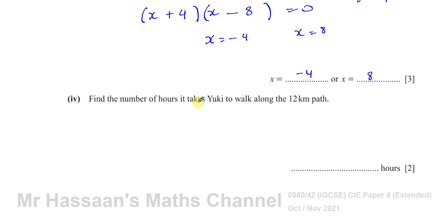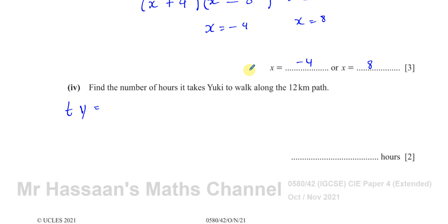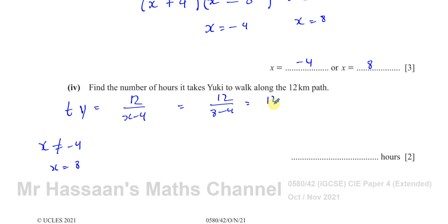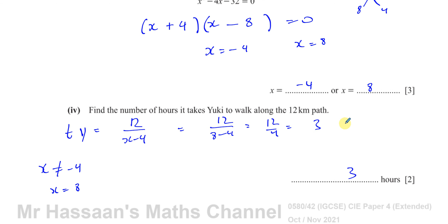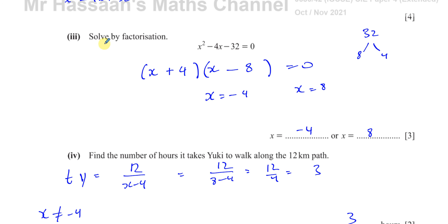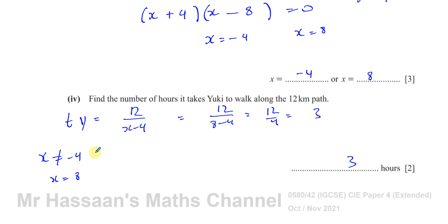Part four: find the number of hours it takes Yuki to walk along the path. Yuki's time was 12/(x − 4). Now we reject x = −4 because it gives a negative time, which doesn't make sense. So x = 8, and Yuki's time = 12/(8 − 4) = 12/4 = 3 hours. It's important that in part three we write both answers, but in part four we apply context to reject x = −4 and use x = 8.